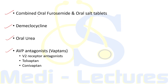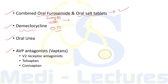Many SIADH patients respond to combined oral furosemide (typically 20 mg twice daily) and oral salt tablets. Furosemide inhibits the counter-current mechanism and blunts urinary concentrating ability; oral salt tablets are given concurrently to counteract furosemide-associated natriuresis. Demeclocycline is a potent inhibitor of principal cells used when sodium levels do not increase with furosemide; however, it can cause excessive natriuresis and direct renal toxicity reducing GFR, so it is avoided in cirrhotic patients due to risk of nephrotoxicity from drug accumulation. Oral urea increases free water excretion.